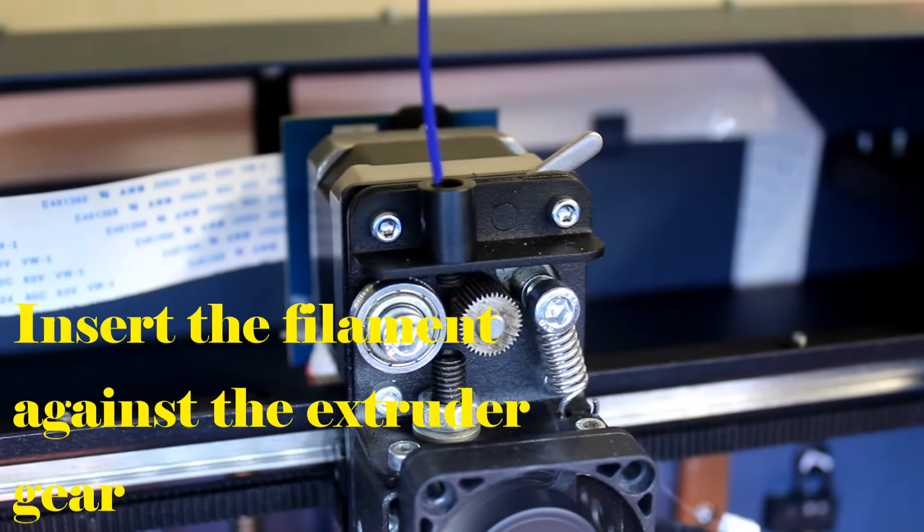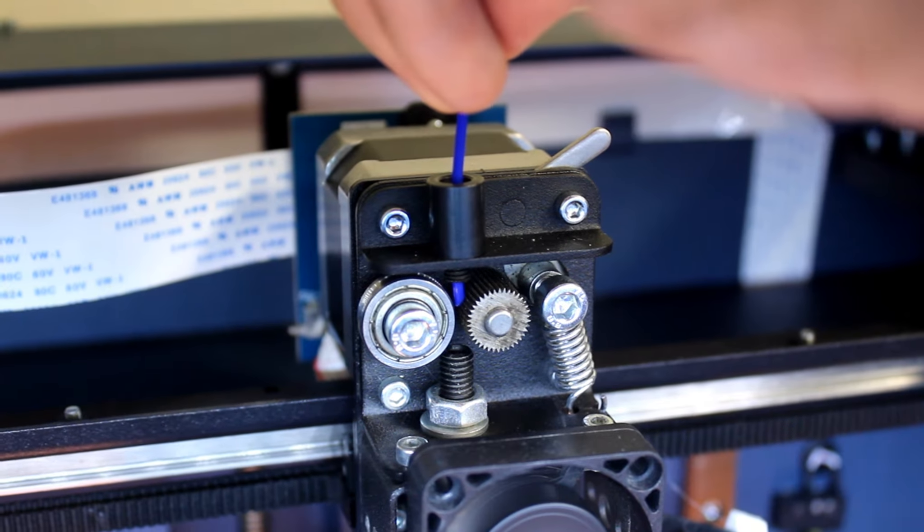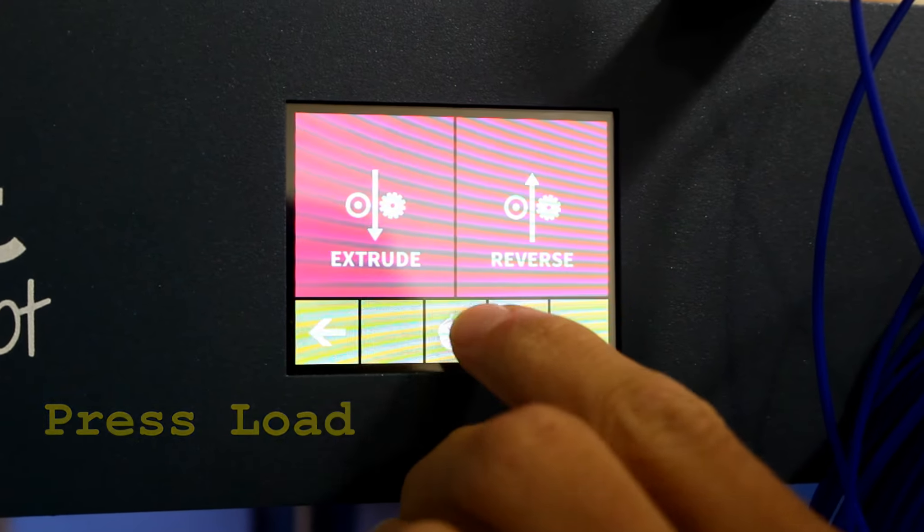Gently press the filament into the extruder hole until the filament touches the extruder gear. Next, press the load button and the machine will pull the filament through.